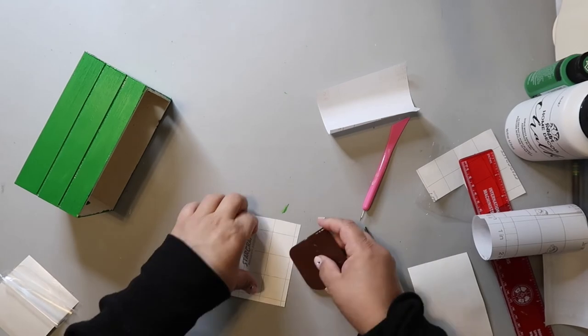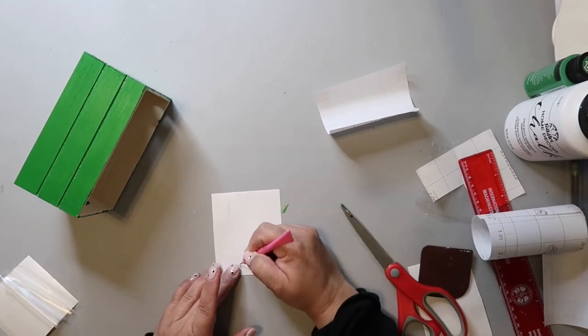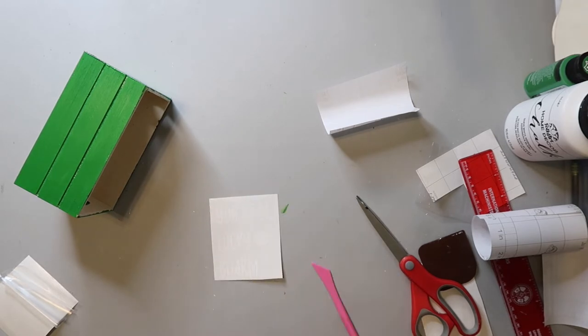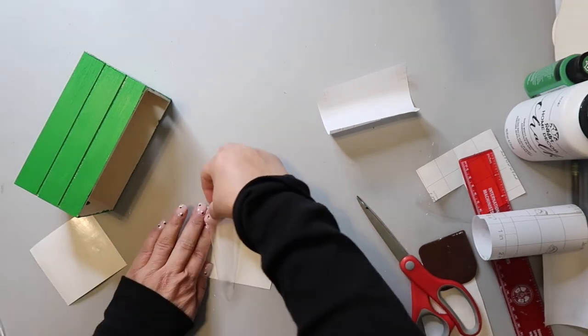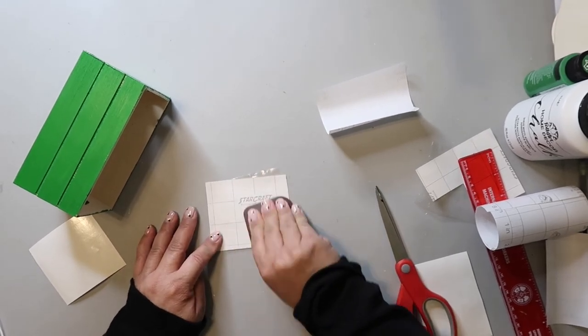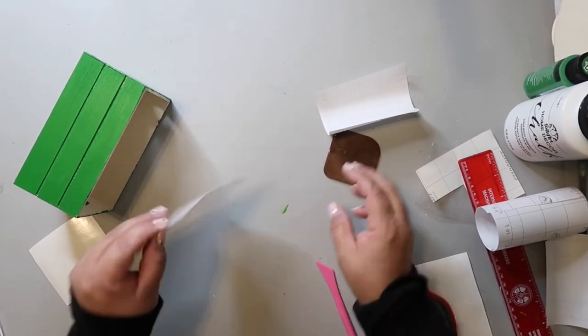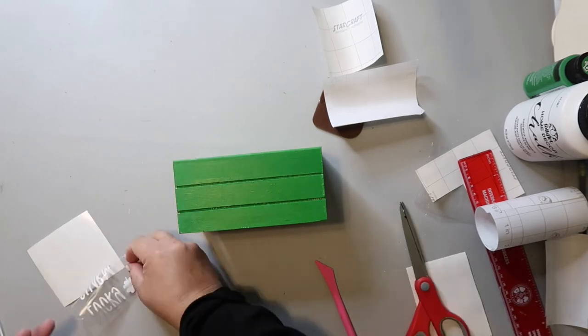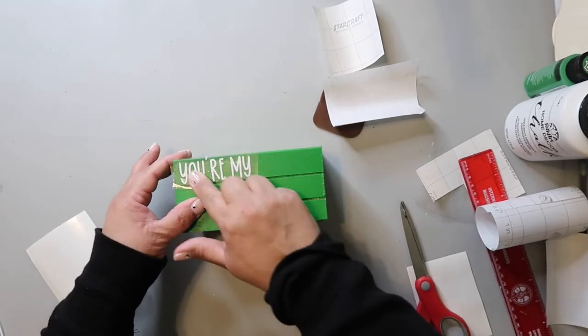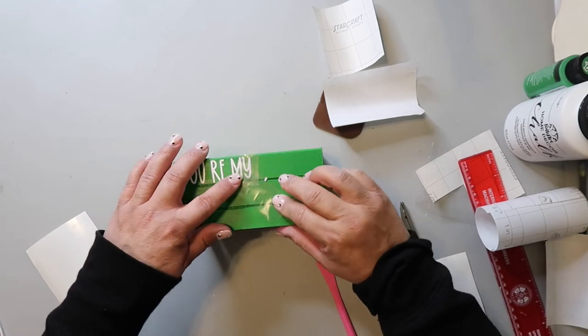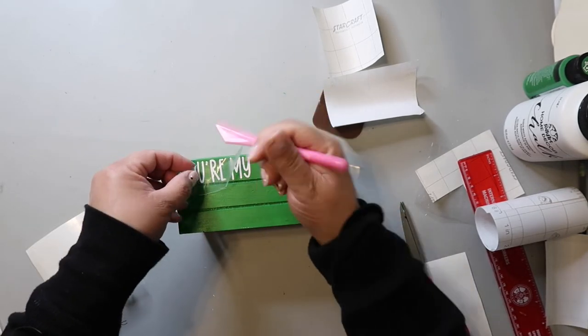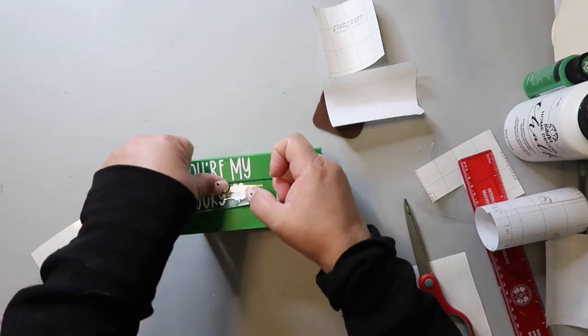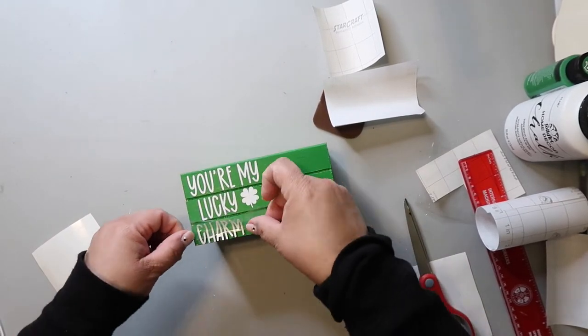I did cut out a decal using my Cricut that says you're my lucky charm, and I just weeded it. I put on transfer tape, and then I transferred it to the crate. The size of my text was one inch, and that seemed to work really well where you could see it easily, and it wasn't too hard to weed, and it wasn't too hard to transfer on. But again, you could use a fine tip paintbrush and paint it on or use a paint pen and get the same effect.